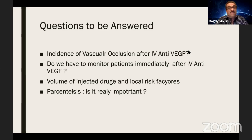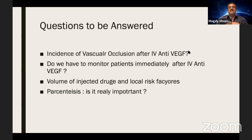Second thing — the volume of the intravitreal injection. Sometimes we inject Avastin 0.1 mL instead of 0.05 mL and the pressure is higher than expected. I always look at the fundus to see if there's any pulsation in the optic nerve head so I know the pressure is getting high. As Dr. Amani said, if anything happens we should do paracentesis immediately to catch this patient.